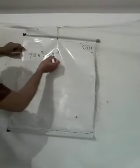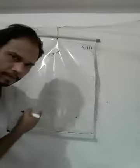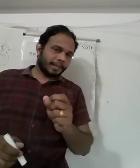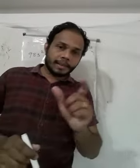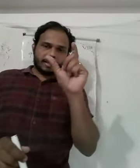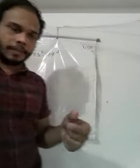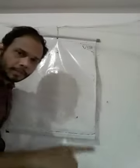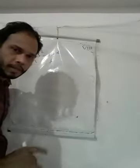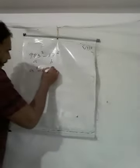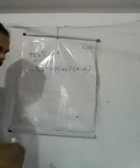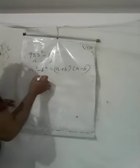This is a square minus B square form. Usually we would compute 983 into 983 minus 17 into 17, but that is very difficult. So we use the identity: A square minus B square equals A plus B into A minus B. This is A and this is B.